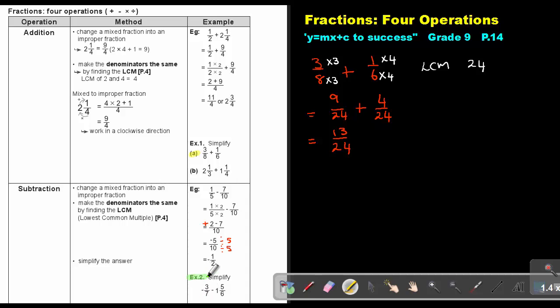If we look at example 2, this will be negative 3 over 7 minus 1 and 5 over 6. Now again, first make it an improper fraction. So it's 3 over 7, it's already correct. This one is 6 plus 5. So this is going to be 11 over 6. So now the LCM of 7 and 6, that will be 42. So I'm going to multiply by 6, multiply by 6, multiply by 7, multiply by 7. So I'm going to get negative 18 over 42 minus 77 over 42.